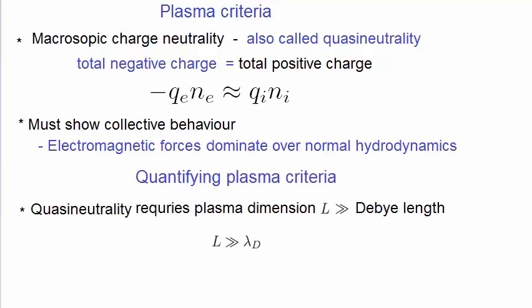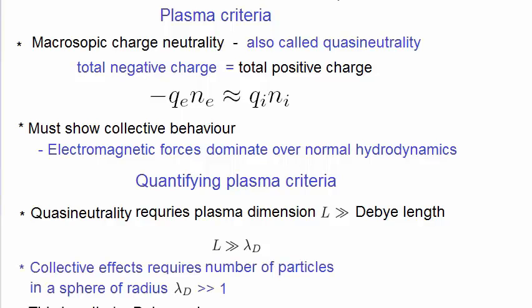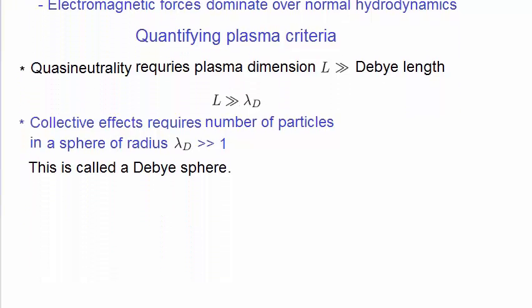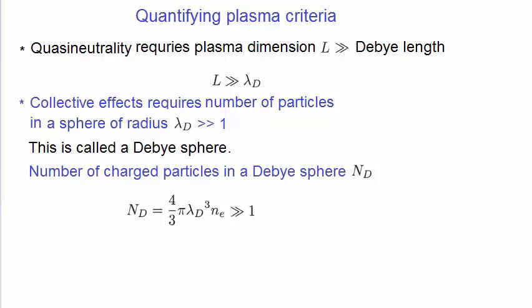So how do we quantify these criteria? Quasi-neutrality requires that the dimensions of a plasma, L say, are much greater than the Debye length. Otherwise, as you've seen from our metal spheres example, that there will be a space charge within the Debye length. Obviously, to have collective effects, we need to be dealing with a large number of particles. So we end up introducing something called a Debye sphere. A Debye sphere is an imaginary sphere that has a radius of 1 Debye length. So we want the number of charged particles in a Debye sphere, Nd, to be much greater than 1, and is given by this expression, where we're basically multiplying the volume of the charged sphere with the number density of the charges. In this case, it's the number density of electrons.